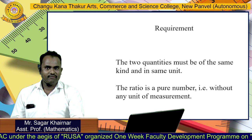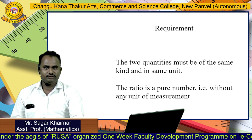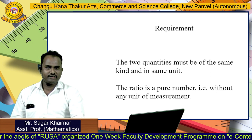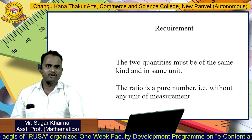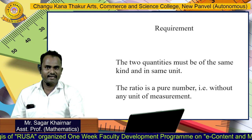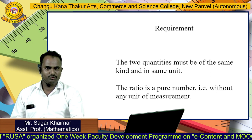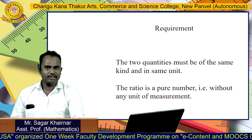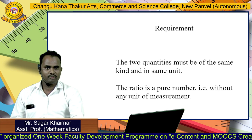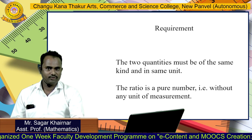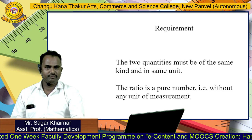Now the requirements for the ratio: the 2 quantities must be of the same kind and in the same unit. The ratio is a pure number, that is, without any unit of measurement.